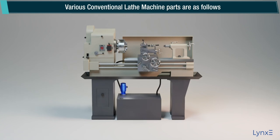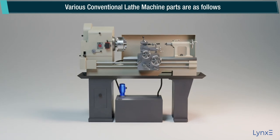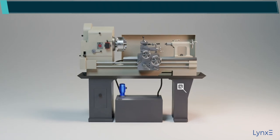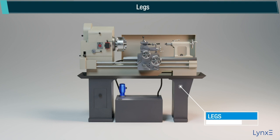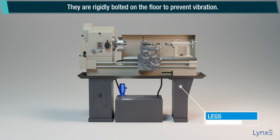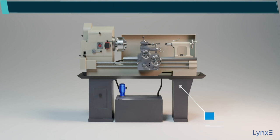Various conventional lathe machine parts are as follows. Legs: Legs are used to carry the load of the machine. They are rigidly bolted on the floor to prevent vibration.